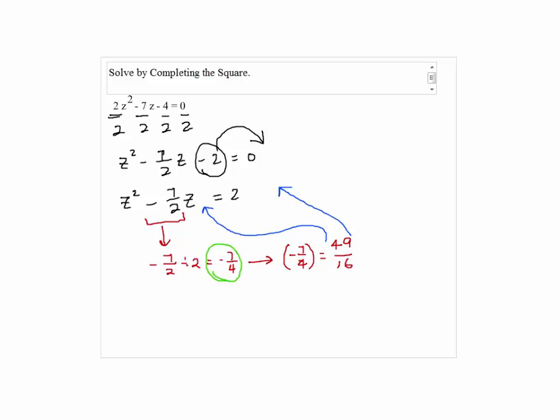The negative 7 over 4 is really critical since we are going to use this number later on when we are completing the square. So we have z squared minus 7 halves z plus 49 over 16 equals 2 plus 49 over 16.